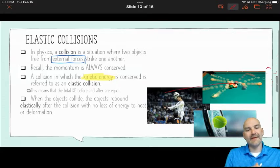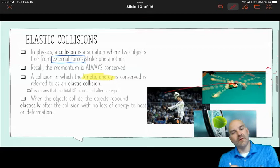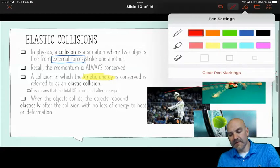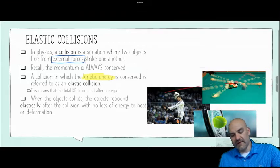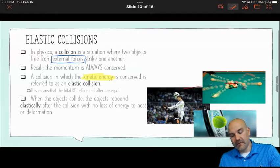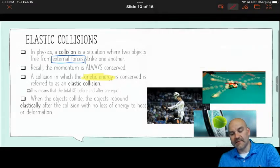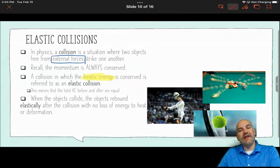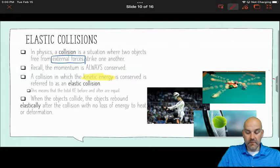All right, so when the objects collide, the reason why we call them elastic collisions is because they will rebound elastically after the collision with no loss of energy to heat or deformation. Now, that's a little bit of a misconception because what happens is sometimes automatically students will think that, oh, look, it's a rebound, right? It's coming off, so it has to be elastic. However, most real-world collisions are going to be the other type which are inelastic, even though they may look like an elastic collision.